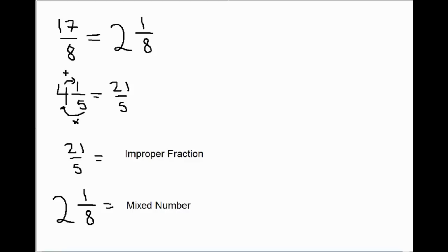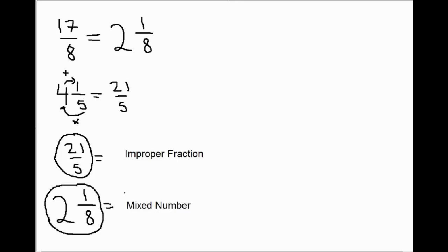Let's talk about a bit of terminology. We've seen these values written in a couple of different ways. One way is where the numerator is bigger than the denominator — when you have a value bigger than a whole written like that, it's called an improper fraction. If you decide to write it as the number of wholes and then the fraction of the last one, we call that a mixed number. So up here is our mixed number, and this one I'm circling is an improper fraction — and that is a mixed number.